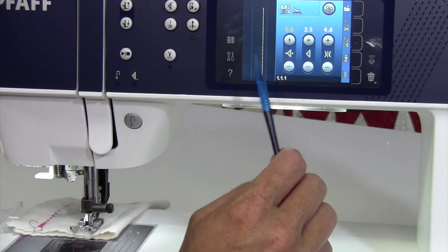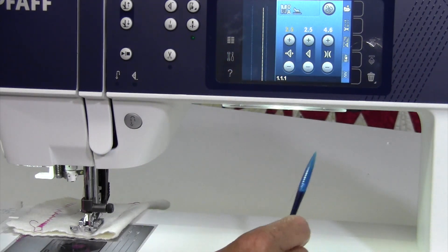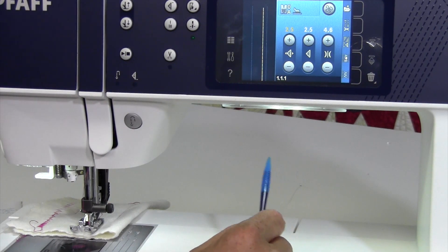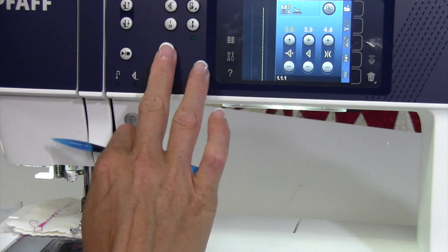If you're working on a zipper and you have your zipper foot on, you can move your needle to the side and up a little closer or not so close, depending on how thick your fabric is.